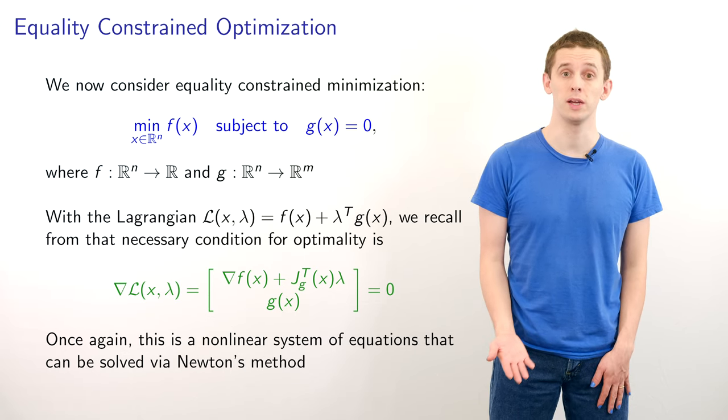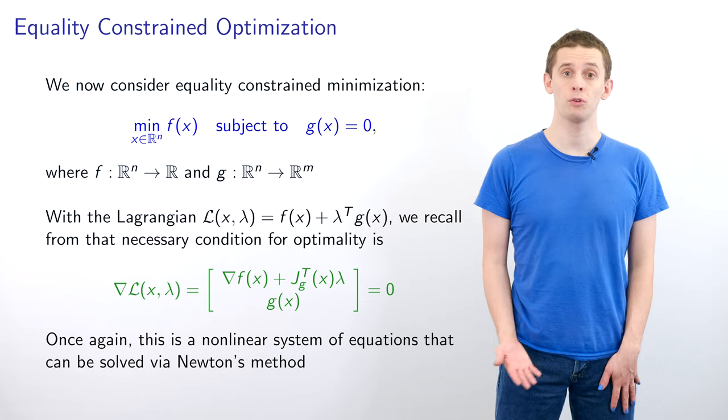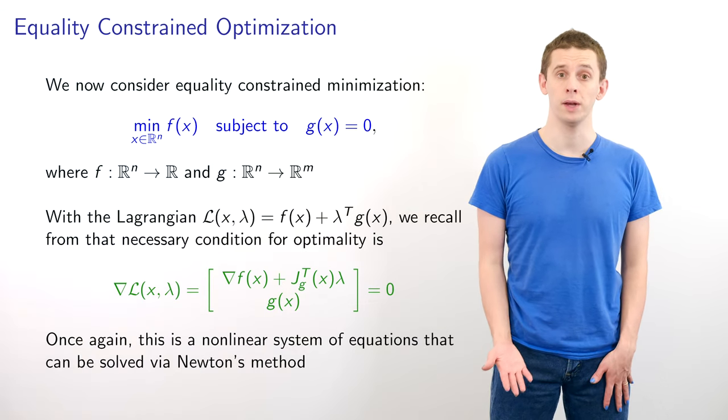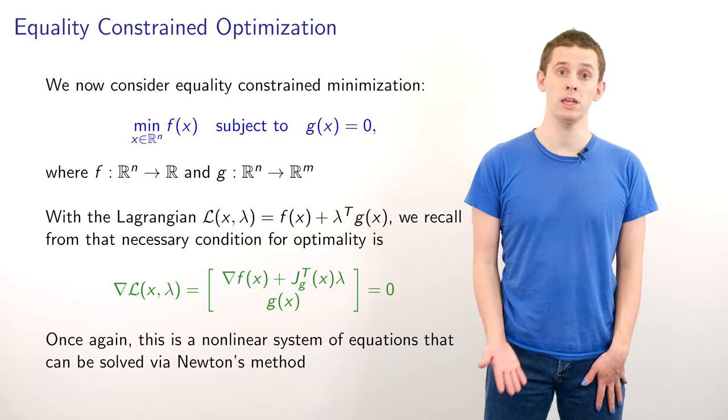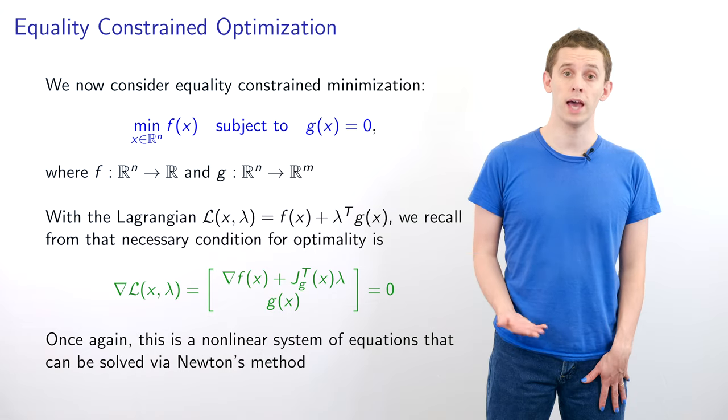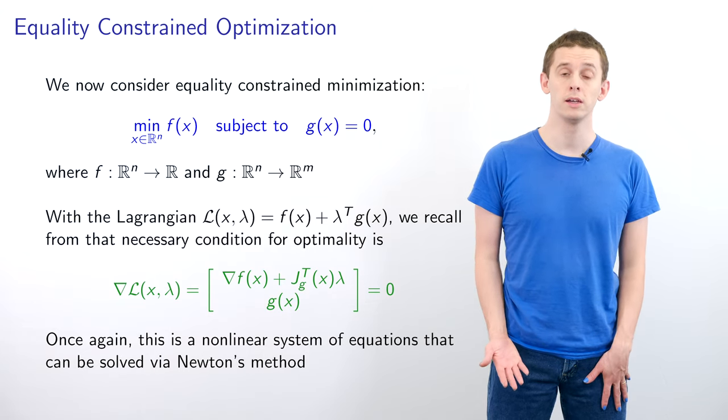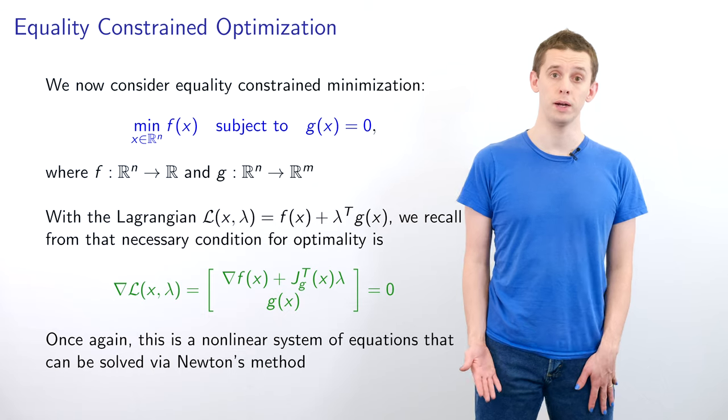Let's now consider equality-constrained minimization. We want to minimize f(x) for x in R^n, subject to g(x) = 0. Here f is a function from R^n to R, and g is a function from R^n to R^m.